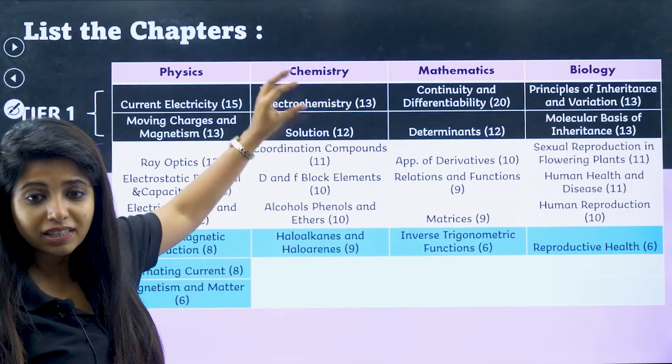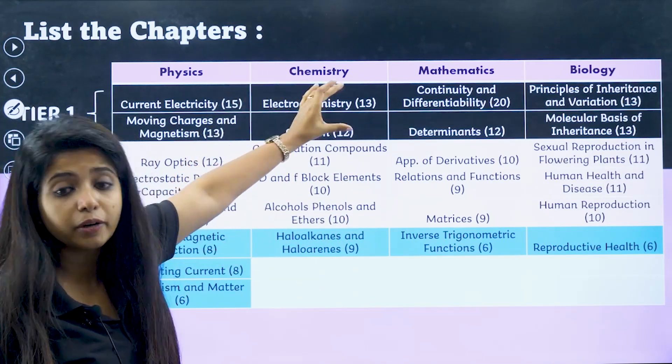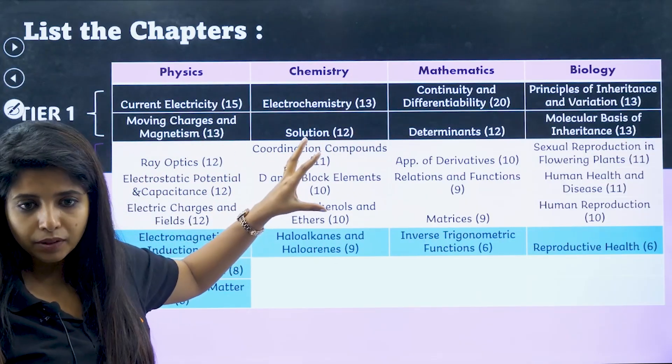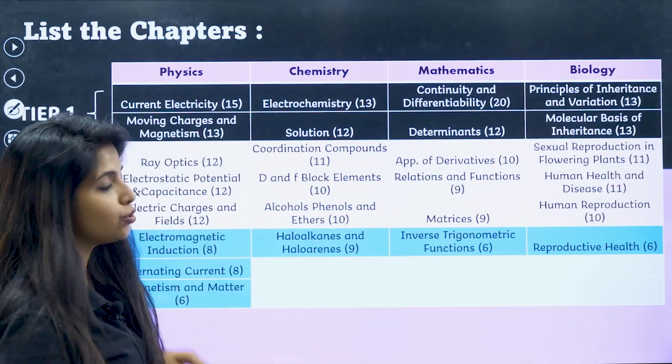But just to give you an understanding that these are the chapters that you should definitely not miss, because these have the highest number of markings. Now you segregated your chapters. Now what you should do?